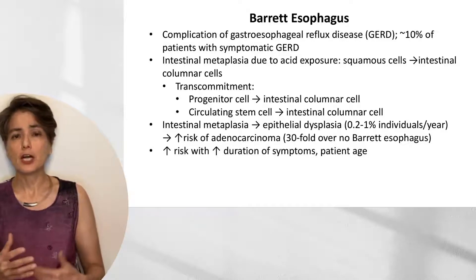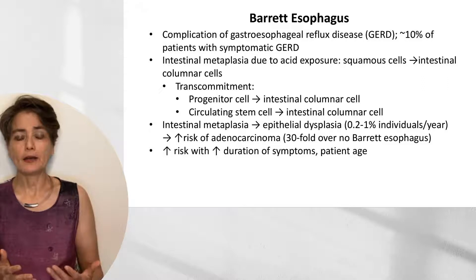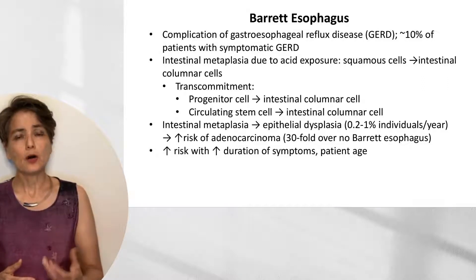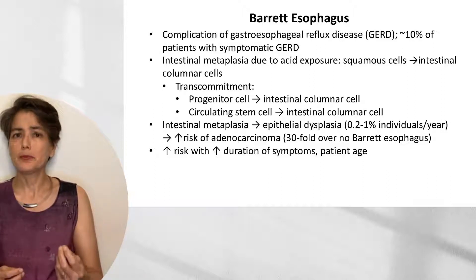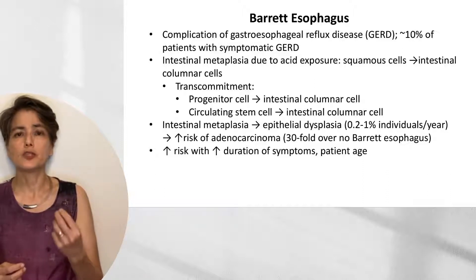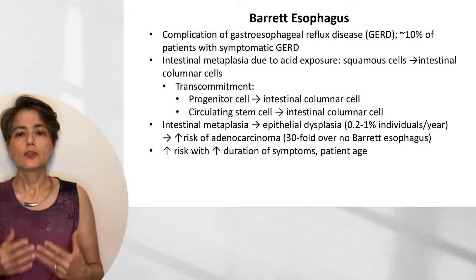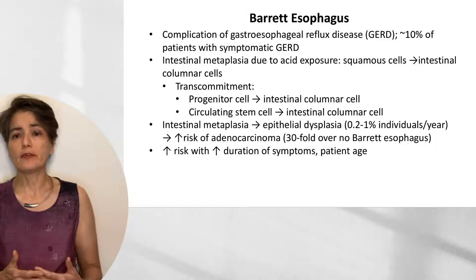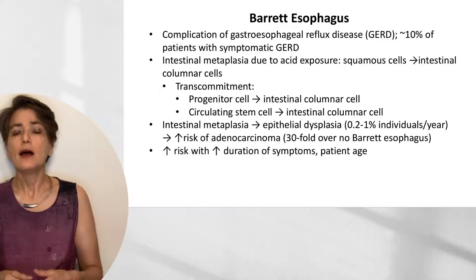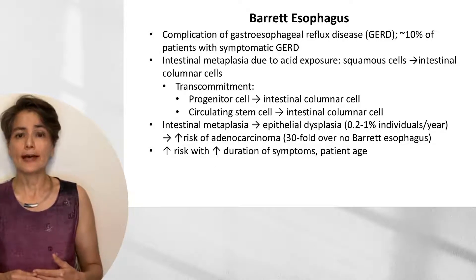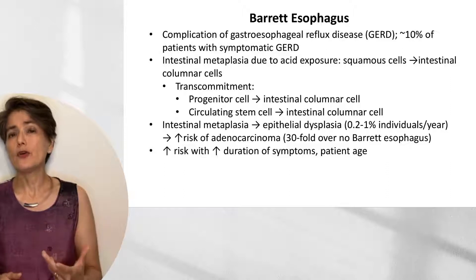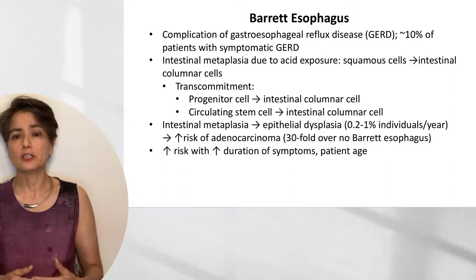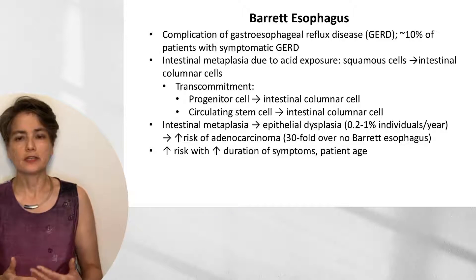Intestinal metaplasia on its own is not necessarily a bad thing — it provides some protection. But metaplasia increases the risk of progression to dysplasia, and dysplasia increases the risk of progression to adenocarcinoma. About 0.2% to 1% of individuals per year will progress from intestinal metaplasia to epithelial dysplasia. Once they do progress, there's about a 30-fold increase in risk of adenocarcinoma compared to patients with no Barrett esophagus at all.